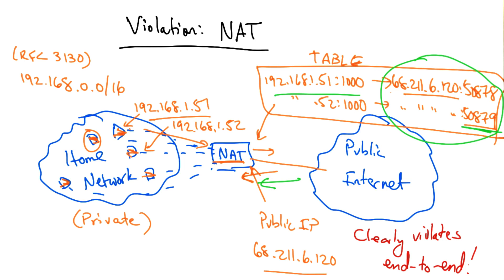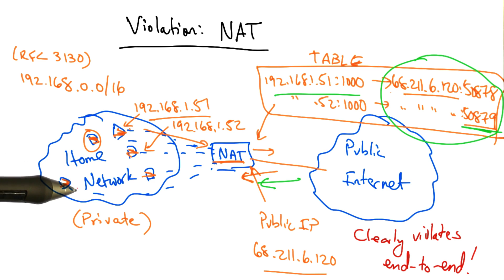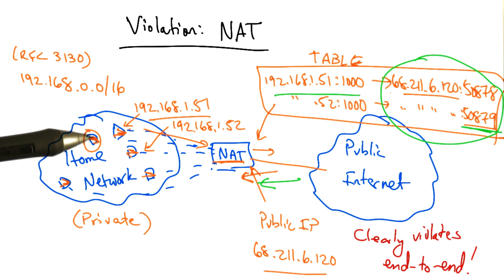NAT clearly violates the end-to-end principle, because machines behind the NAT are not globally addressable or routable, and other hosts on the public internet cannot initiate inbound connections to these devices behind the NAT.